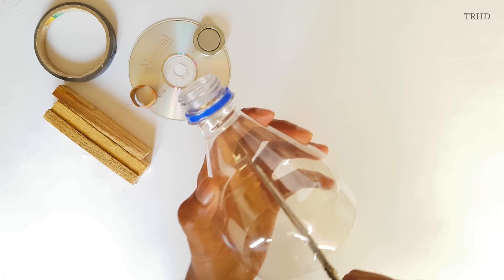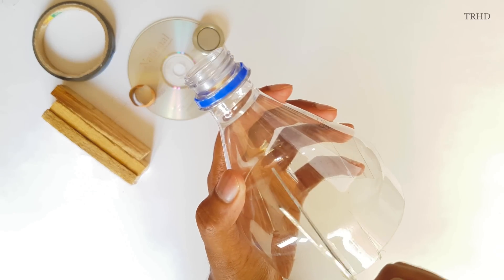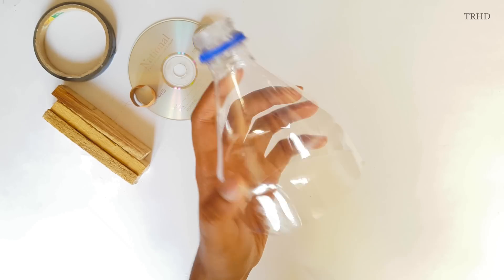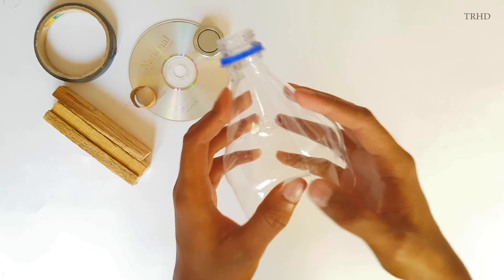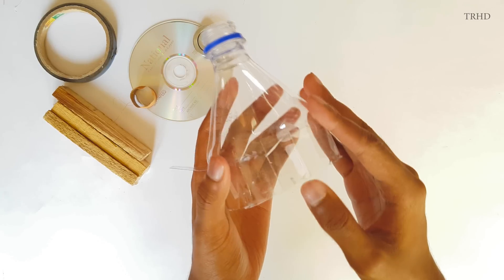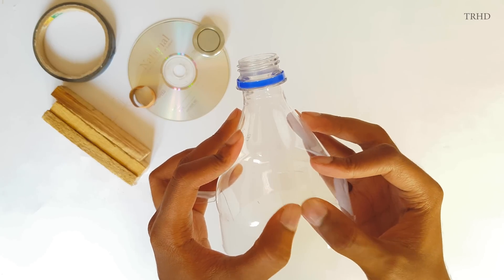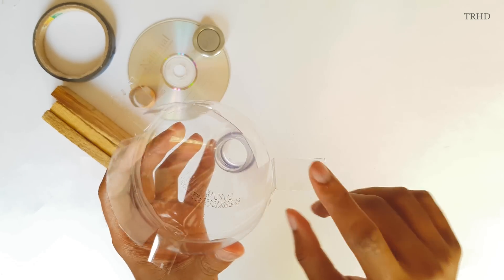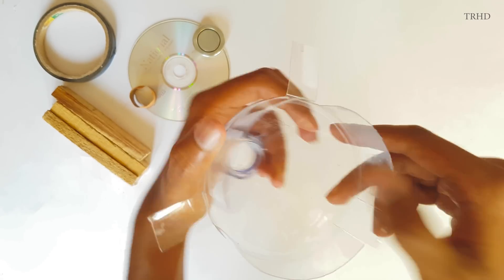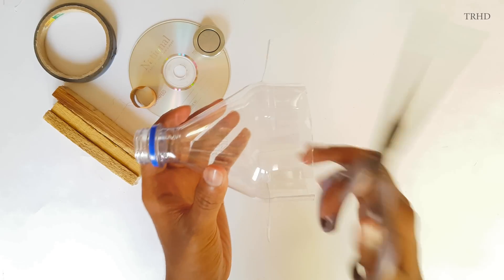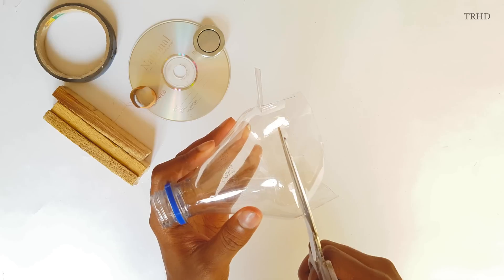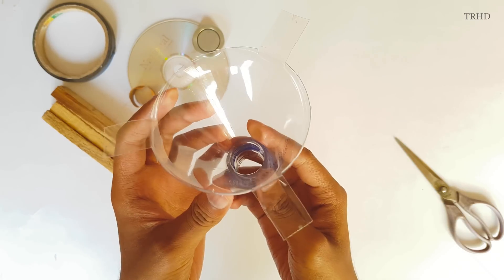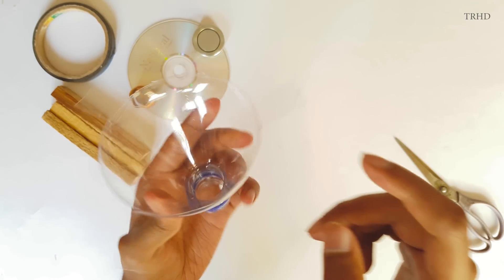Now you need to cut this plastic cone in three places 120 degrees apart. Take a scissors and start cutting it just like this. So now after cutting the slits you need to bend them. Just bend it like this. Now it should look somewhat like this. Now remove this extra plastic, we don't need it. Our speaker cone is ready.